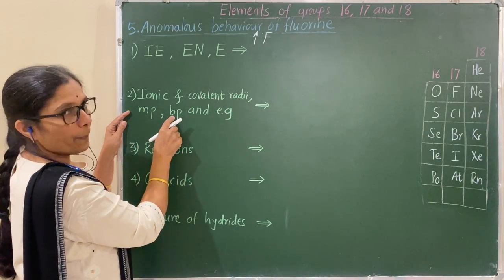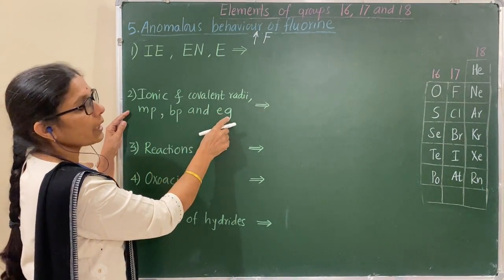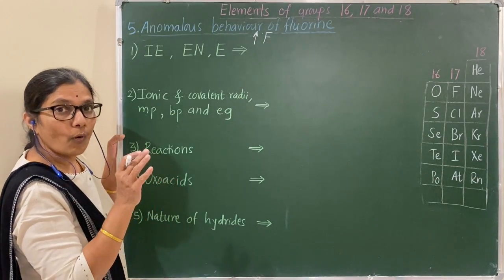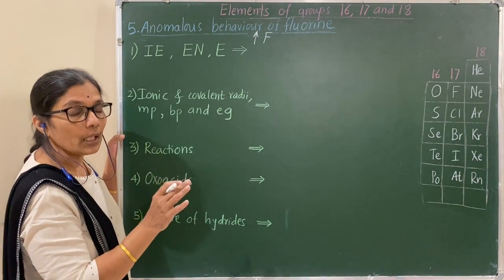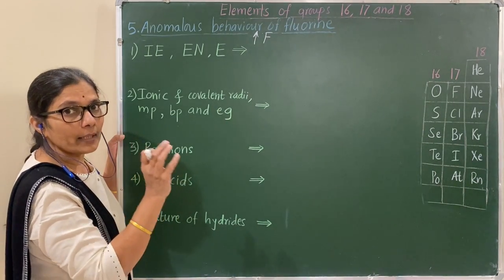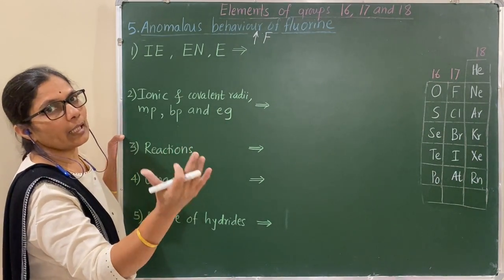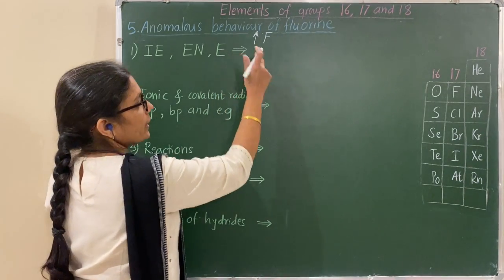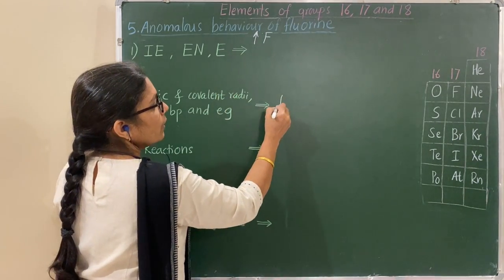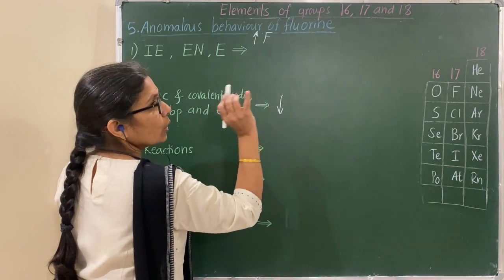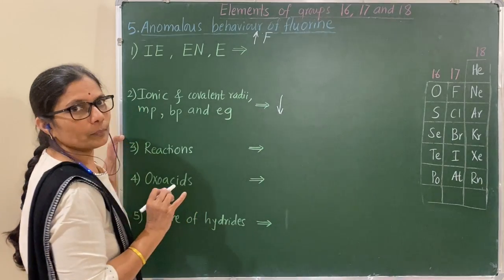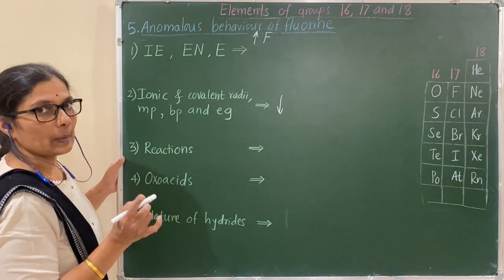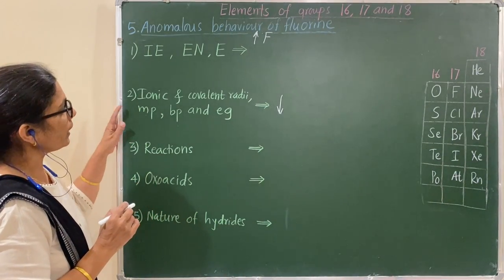Ionic and covalent radii, melting point, boiling point, and electron gain enthalpy values for fluorine are quite low — lower than expected for fluorine compared to trends in other halogens.